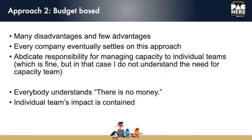From what I understand, even Facebook has moved toward a budget-based approach. The advantage of budget-based capacity is that everybody understands 'there's no money, we've spent our budget, you have to wait.' If any individual team messes up, it's contained within their budget and doesn't impact others. The problems are many: people are incentivized to spend money they don't need because if they give it back they might not get it next quarter. People are incentivized not to trade resources with others and basically not to be a team — there's no point in collaborating.